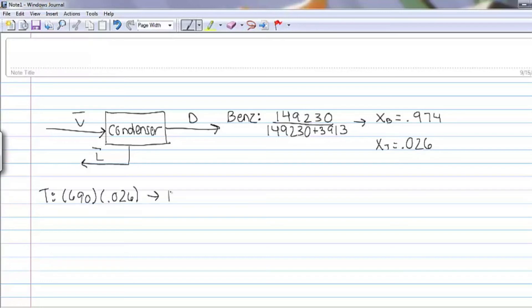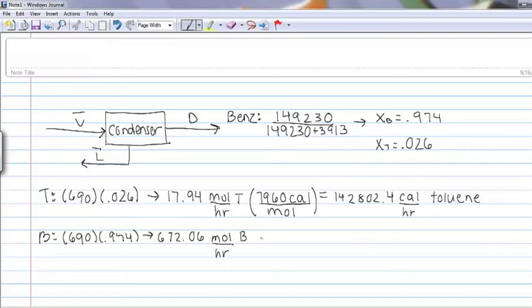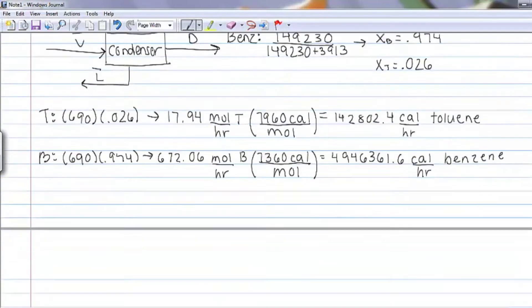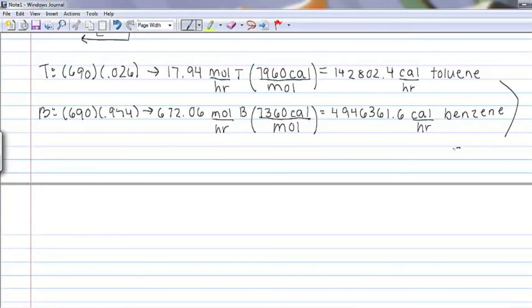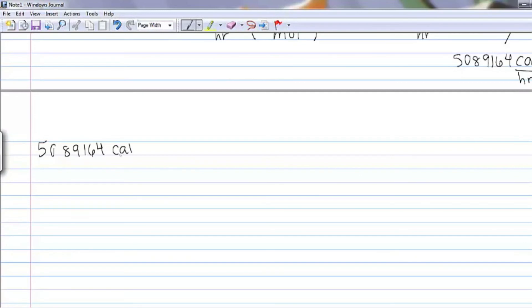Then we can use these mole fractions to convert the molar flow rates of toluene and benzene into calories per hour via the latent heats of vaporization. Combining these gives us the total heat in calories that the chemicals generate by condensation. We can then convert these calories to joules using the conversion factor of 4.184 joules per calorie.